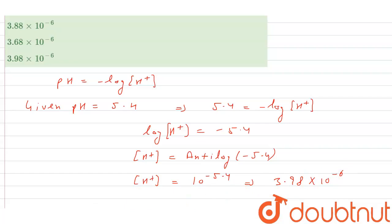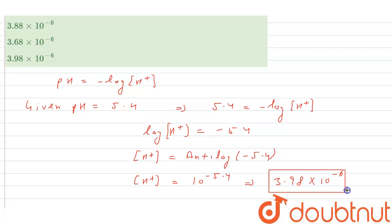So the H⁺ concentration is our answer. The correct answer would be 3.98 into 10 to the power minus 6.